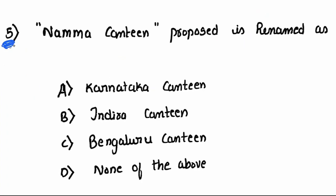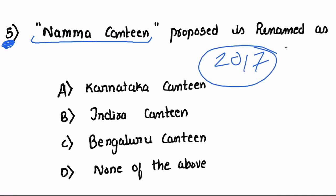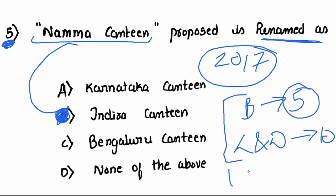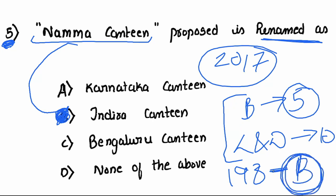The last question: Namma Canteen, proposed in the 2017-18 budget, is renamed as — Karnataka Canteen, Indira Canteen, Bengaluru Canteen, or none of the above? The answer is Indira Canteen. Under this scheme, you get breakfast at ₹5 and lunch and dinner at ₹10. It is available in 198 wards of Bangalore and was supposed to start from July.